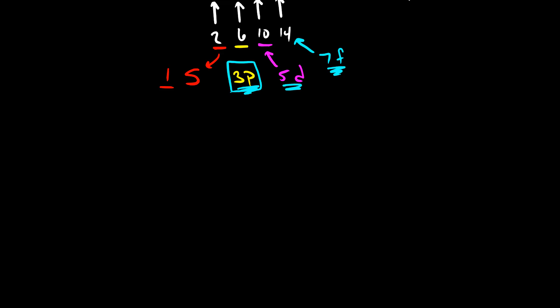P orbitals all have identical shapes — the only difference is how they're positioned. If this is our nucleus, the shape of the P orbital looks like a dumbbell around it. It has two different lobes: one lobe on one side of the nucleus and one on the other side. The electrons are equally distributed throughout this entire shape. We have three different P orbitals that all look like this; the only difference is how they're positioned in space.